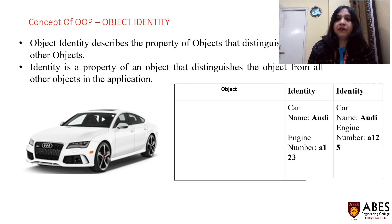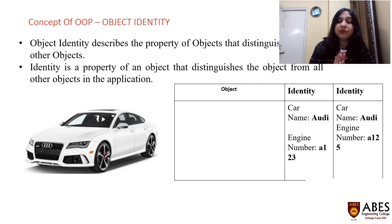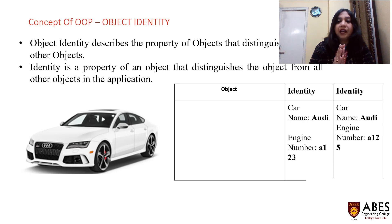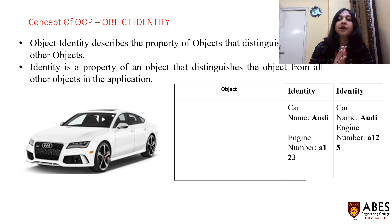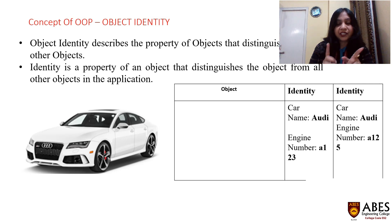Regarding object identity: every object has a unique identity. For example, a car is an object, but every car has a unique identity. A car may be an Audi — it has a serial number. If we are talking about two Audi cars, then those two cars will also have different identities: their engine numbers will be different and their serial numbers will be different.